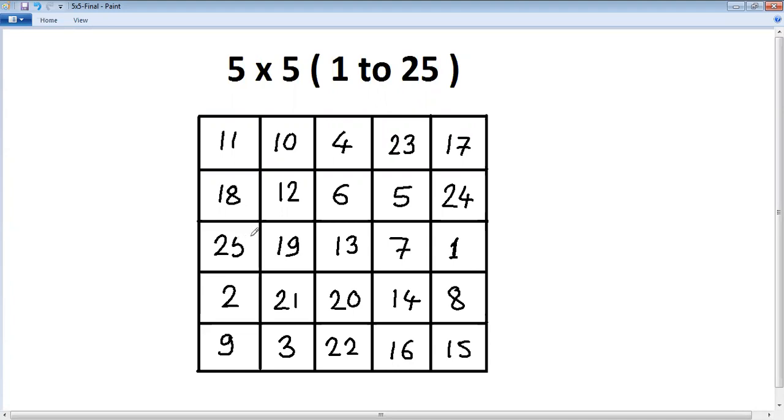So with this our 5 by 5 magic square is ready. If you check each total of this row as well as each total of this column and both diagonals will be the same, and that total if you check it will be 65. Later on in further sessions we'll learn how to calculate the total without drawing magic square. So continue practicing, thank you.